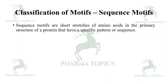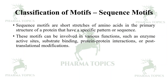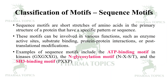Classic classification of motifs: the first is sequence motifs. Sequence motifs are short stretches of amino acids in the primary structure of a protein that have a specific pattern or sequence. These motifs can be involved in various functions such as enzyme active sites, substrate binding, protein-protein interactions, or post-translational modifications.